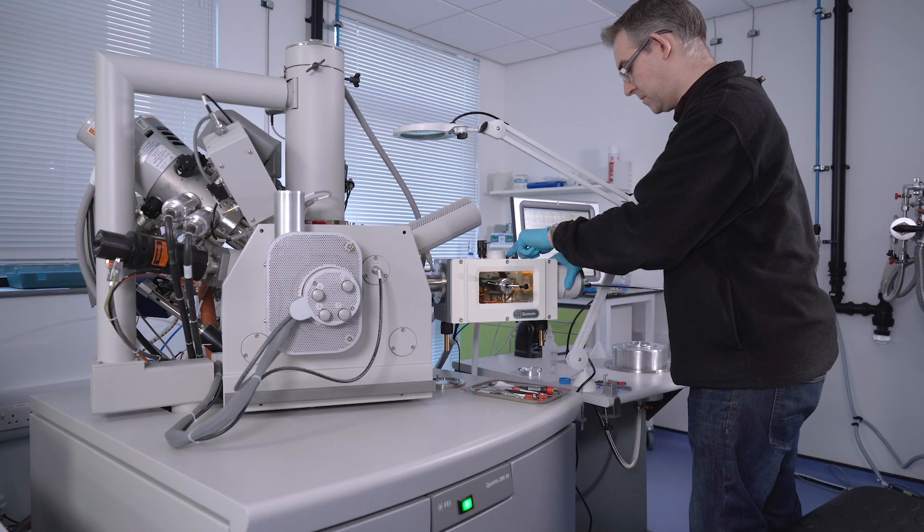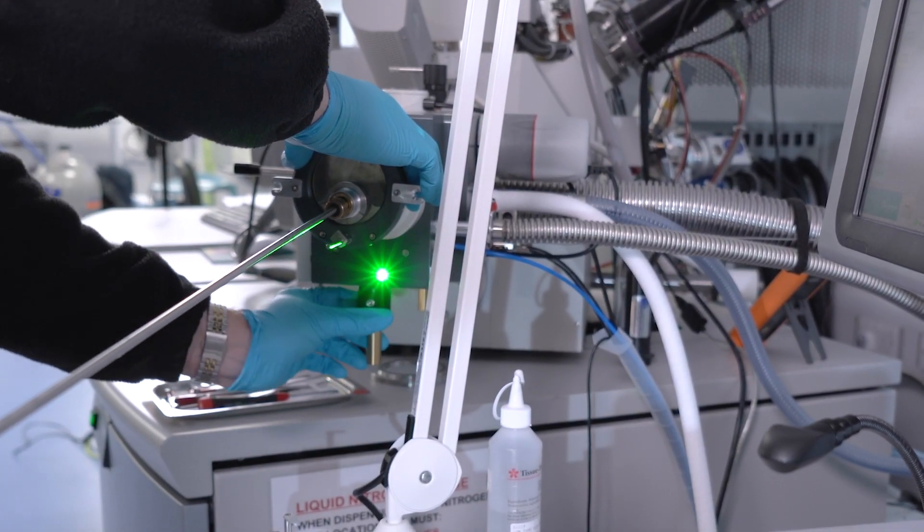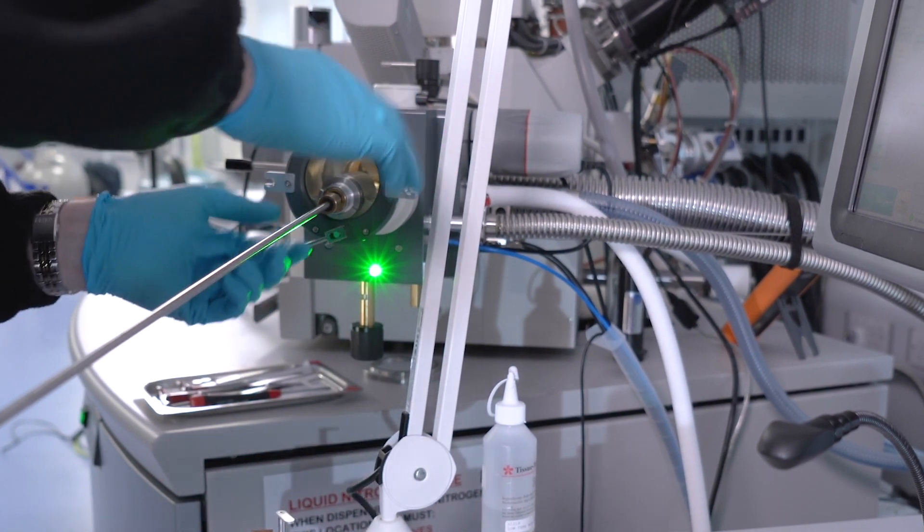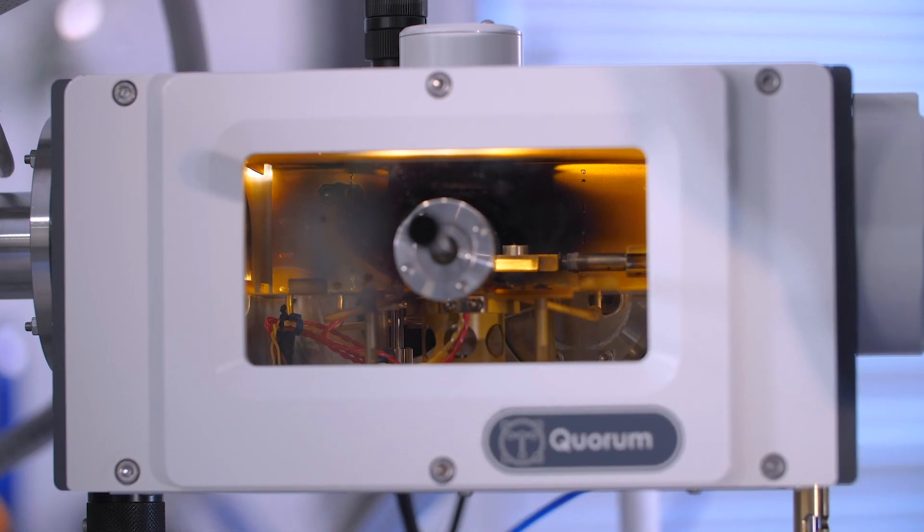So once the transfer pot is attached to the preparation chamber, we pump out the airlock, and once that reaches the right vacuum, it then allows us to open the valve and we slide the specimen in onto the cold stage in the preparation chamber.